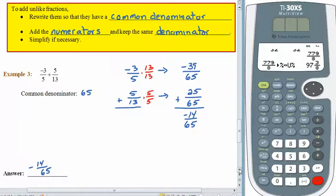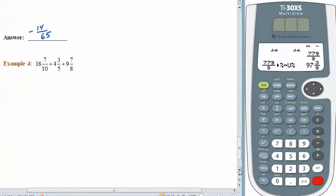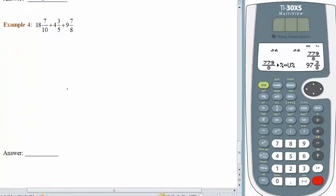Okay, one more. Let's slide down to the bottom here. And check this one out. Again, I like to write these things vertically, just so it gives me a place to keep track of all the changing denominators, and it keeps my problem organized. So, let's see. We have 18 and 7 tenths plus 4 and 3 fifths plus 9 and 7 eighths. We need a common denominator.